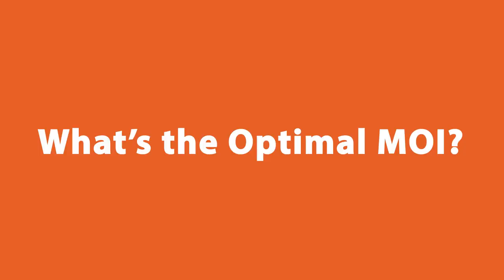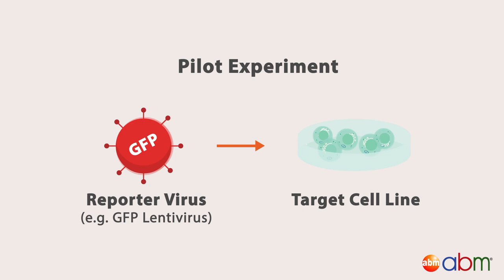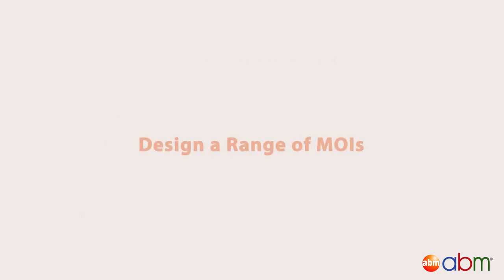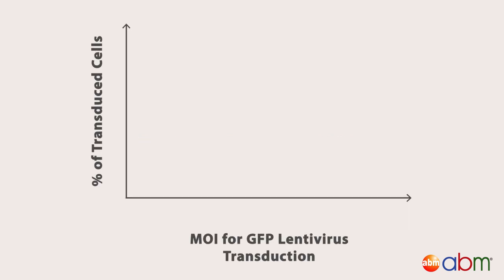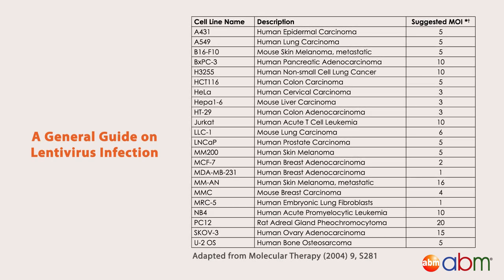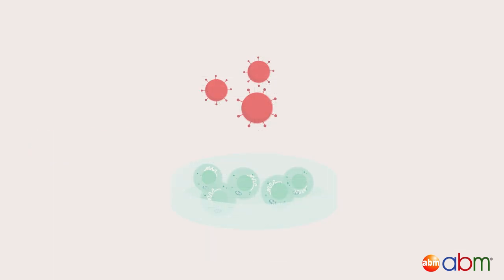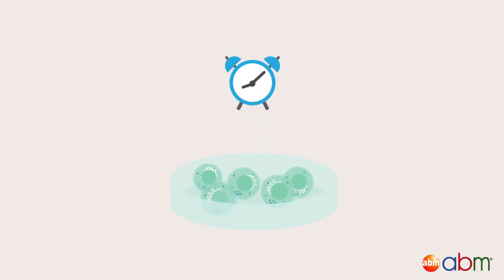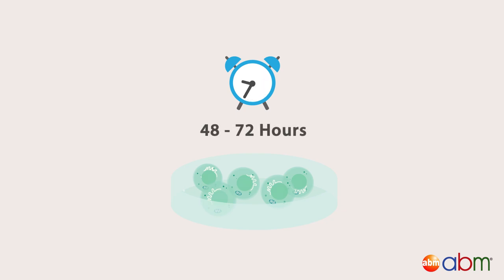So how do you determine the optimal MOI for your experiment? Simply perform a pilot experiment using a reporter virus on your target cell line. For example, using a GFP lentivirus, design a range of MOIs to use — let's say 6 conditions ranging from MOIs of 1, 2, 5, 10, 15, and 30. It is typically better to test a lower MOI range to avoid cytotoxicity at the higher MOIs. A good starting point would be to reference commonly used MOIs for cancer cells and devise the range around its suggested MOI. After you have infected your cells, allow the appropriate time to pass before evaluating the fluorescence. For lentiviruses, this is generally 48 to 72 hours post-infection.